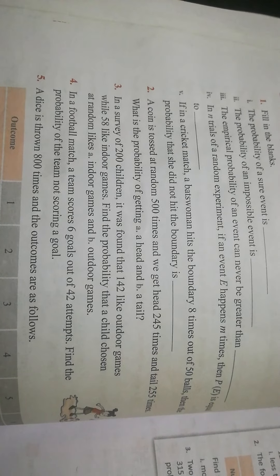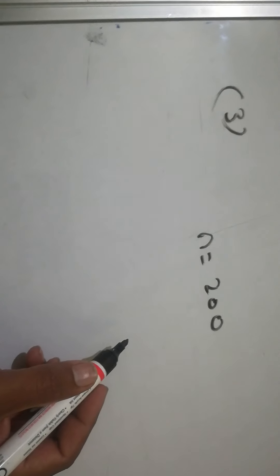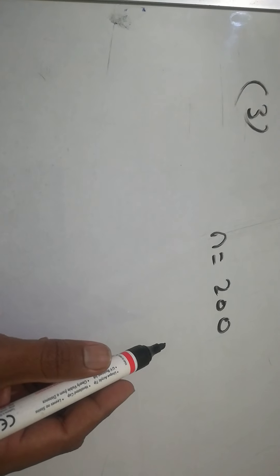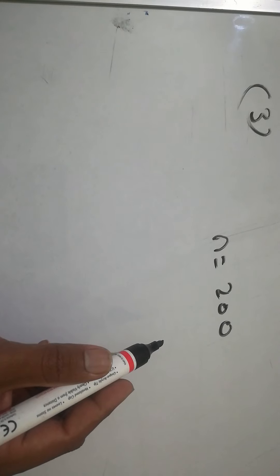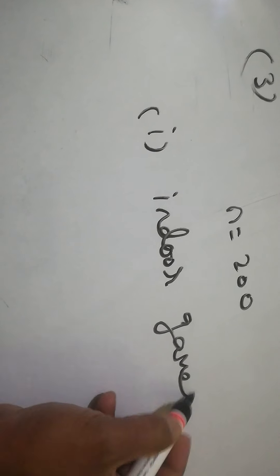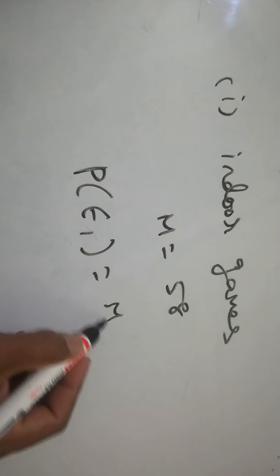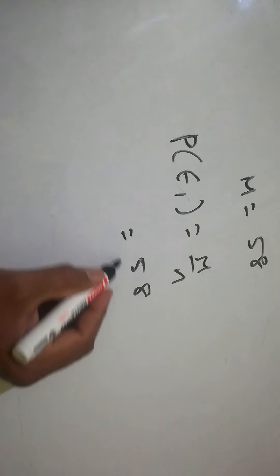Next, question number 3. In a survey of 200 children, it was found that 142 like outdoor games while 58 like indoor games. Find the probability that a child chosen at random likes indoor or outdoor games. Total number of children N equals 200. The first question is indoor games: M equals 58. So P of E1 equals M by N, that is 58 by 200.